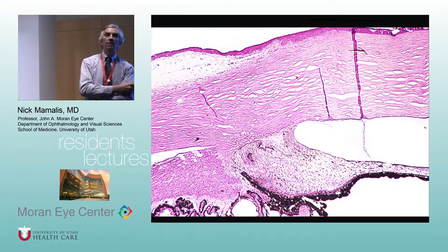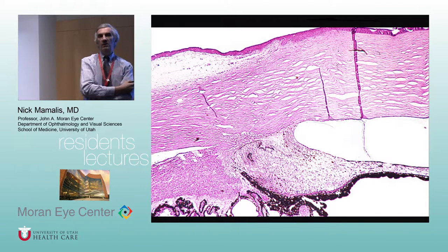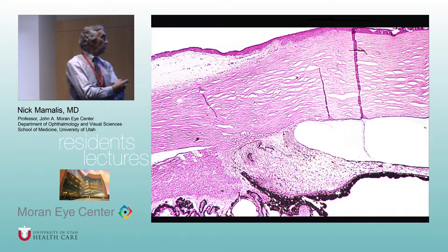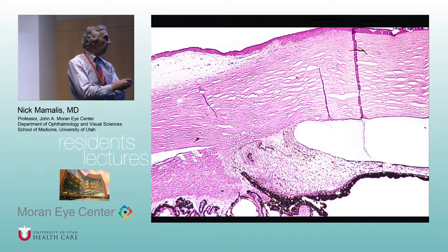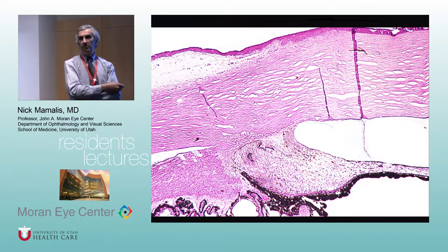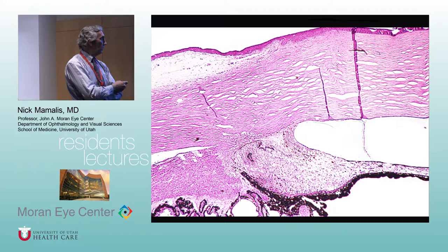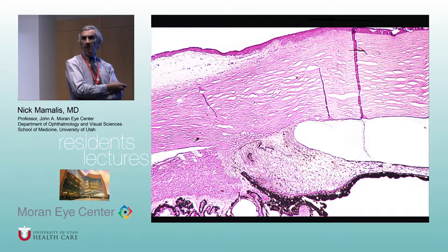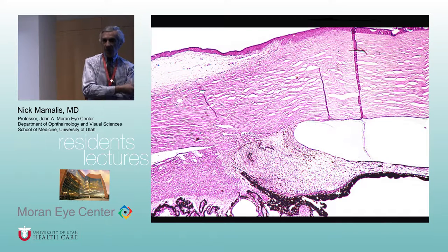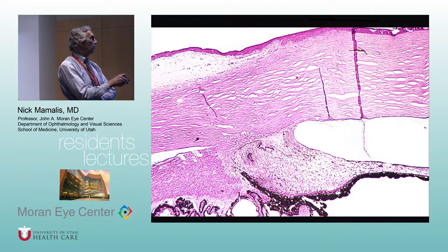Sometimes you get secondary angle closure. Looking at this picture, there appears to be scarring closing off the angle — that's called PAS, peripheral anterior synechiae: peripheral closure of the angle with scarring. Here you can see secondary angle closure with the meshwork scarred off, with the angle stuck to it.